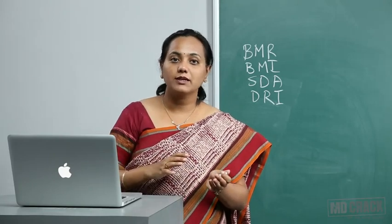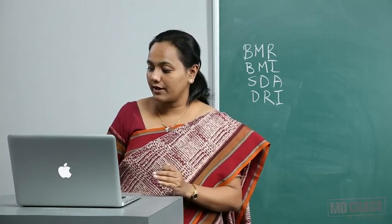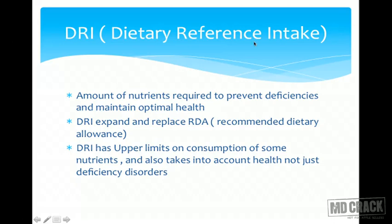DRI is asked in recent entrance exams. It is the amount of nutrients required to prevent deficiencies and maintain optimal health. DRI expands and replaces RDA. It includes four values, includes upper limits on consumption of some nutrients (tolerable upper limits), and takes into account health maintenance — not just prevention of deficiency disorders.